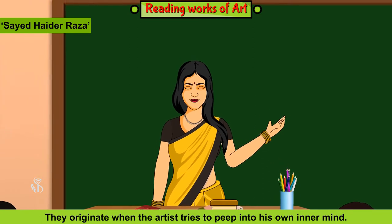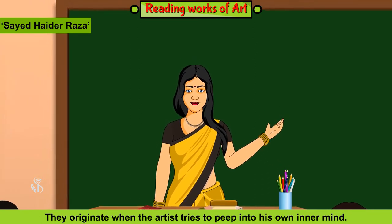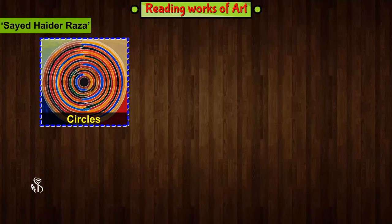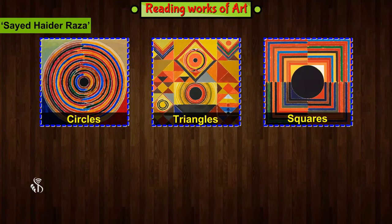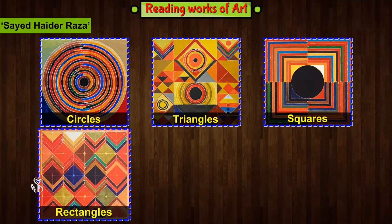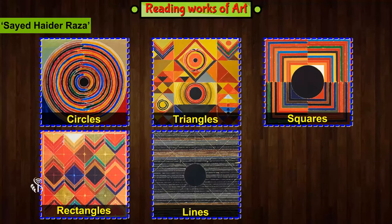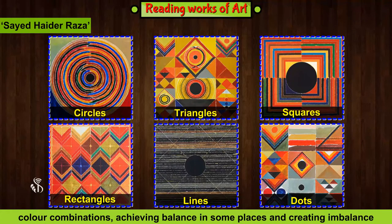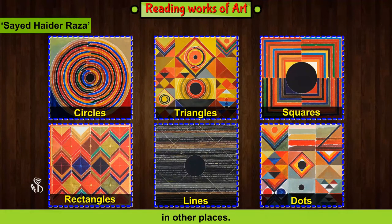Such paintings originate when the artist tries to peep into his own inner mind. They are made by arranging circles, triangles, squares, rectangles, lines, and dots in different compositions, using effective techniques of applying paint, attractive colour combinations, and achieving balance in some places while creating imbalance in others.